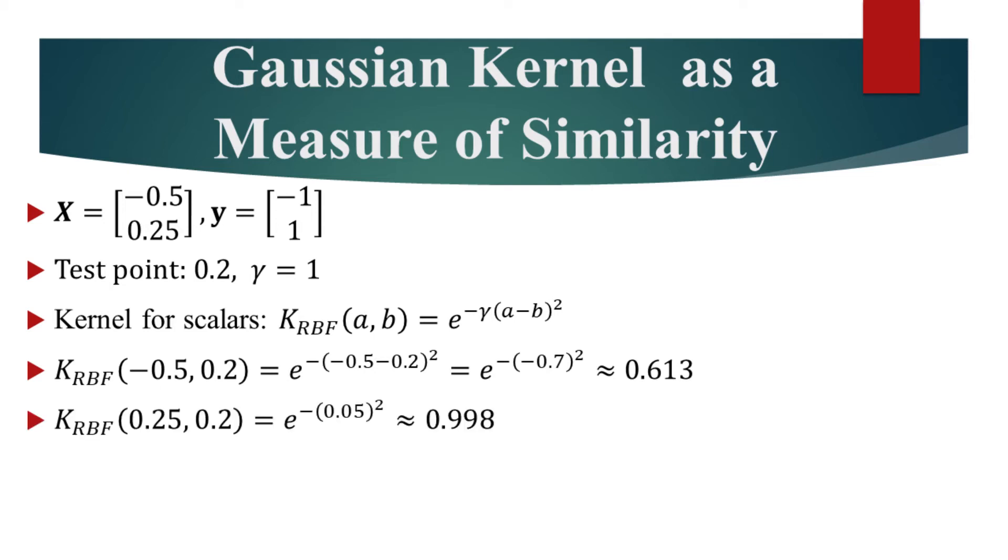If we do the same with the second training example, we will get a response approximate to 1. The response is greater for the second example. This means that the second example is more similar to the test point than the first one.